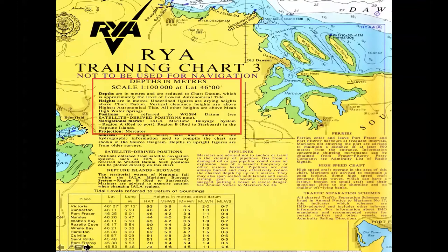Moving on, we've got a box of information. The written information in the legend will vary from chart to chart depending on the area the chart is covering. The first thing it says is that depths are in metres and are reduced to chart datum, which is approximately the level of the lowest astronomical tide. Chart datum is a fictitious line that extends from a slot cut in the harbour wall at Newlyn in Cornwall and is the standard for which the depth of water is measured for the world.